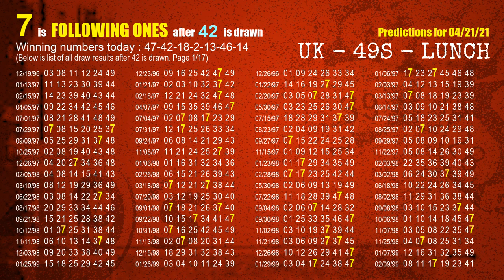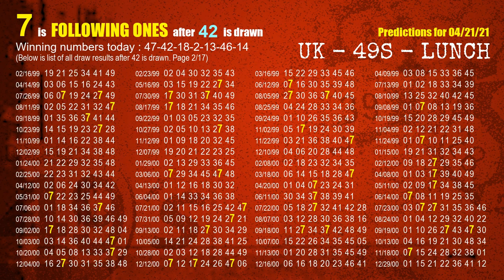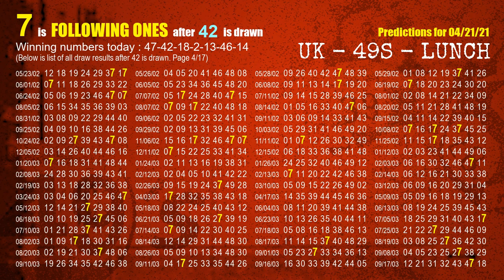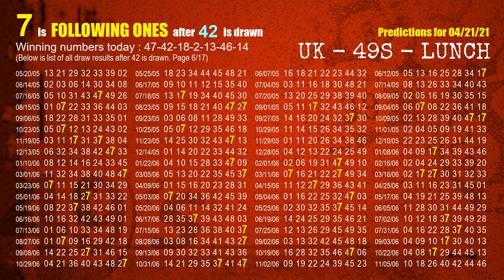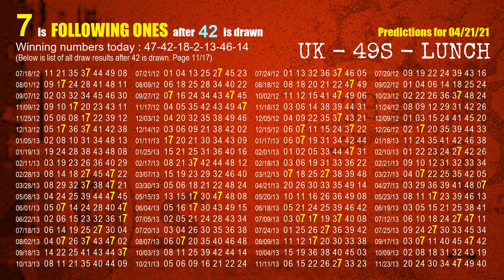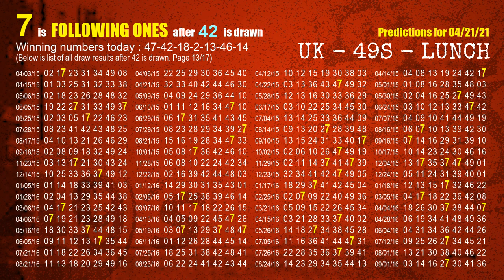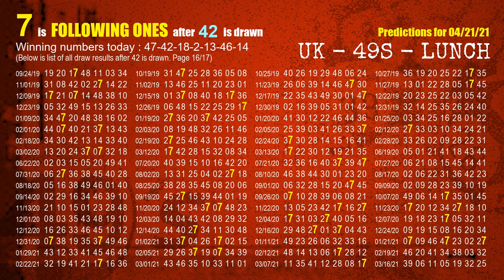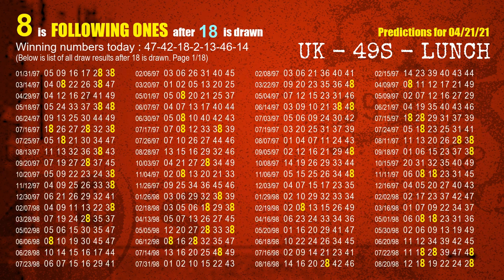The second winning number is 42. The most frequently following units digit is 7 when 42 is the winning number in the last draw. The third winning number is 18. The most frequently following units digit is 8 when 18 is the winning number in the last draw.